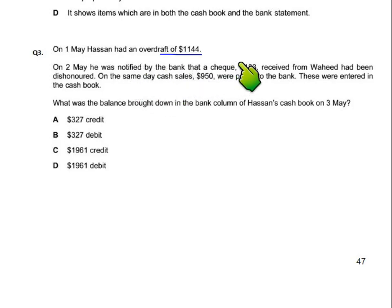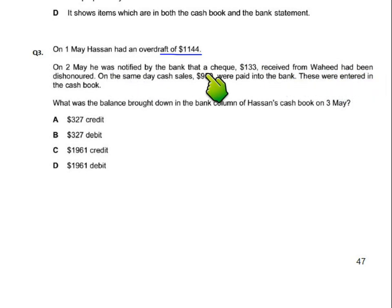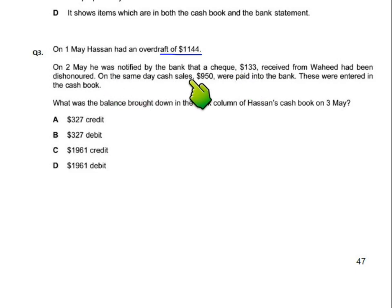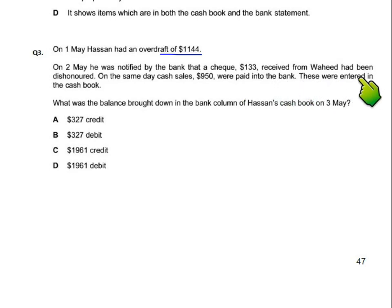On second May, he was notified by the bank that a check of 133 received from Waheed had been dishonored — bounce ho gaya. On the same day, cash sale of 950 was paid into the bank; they were entered in the cash book.